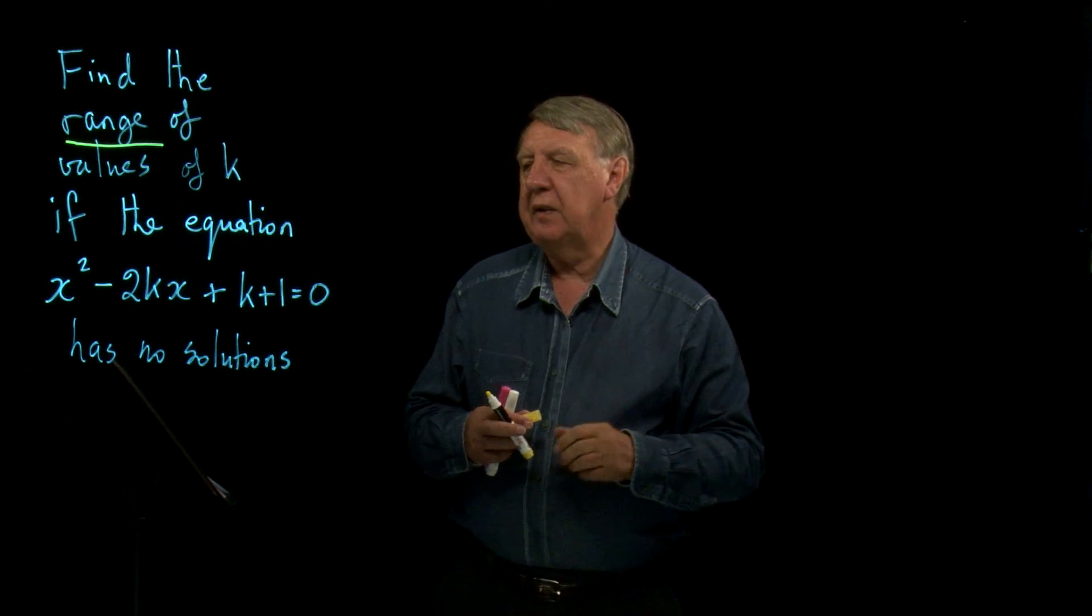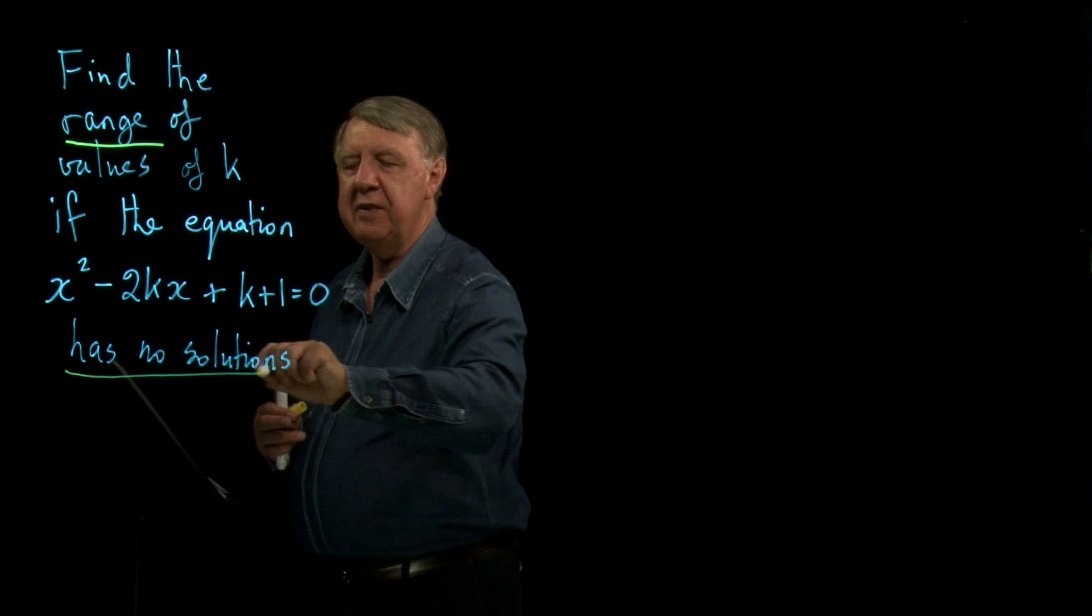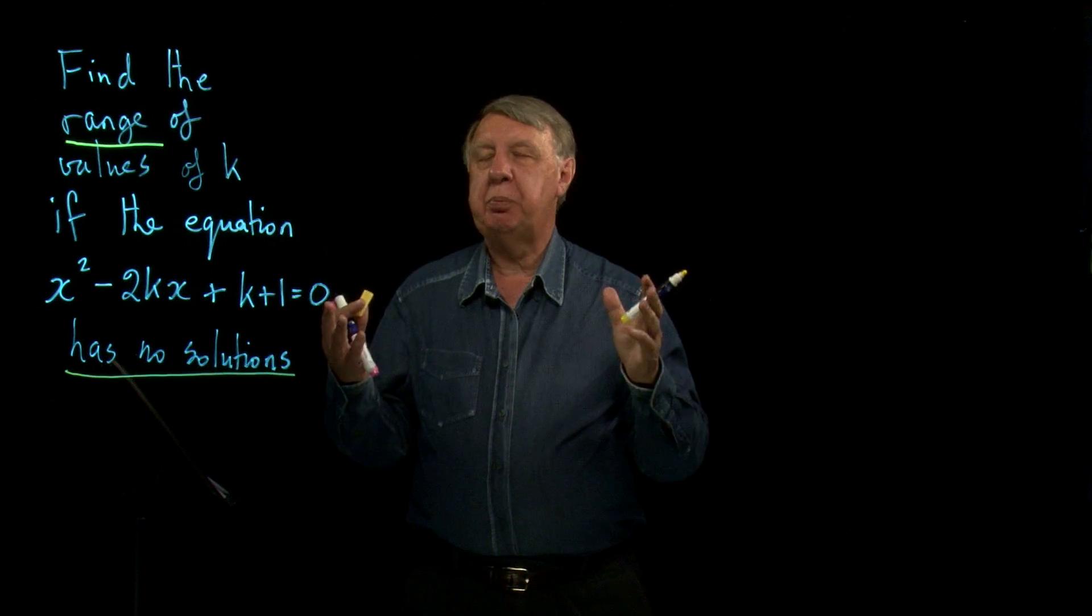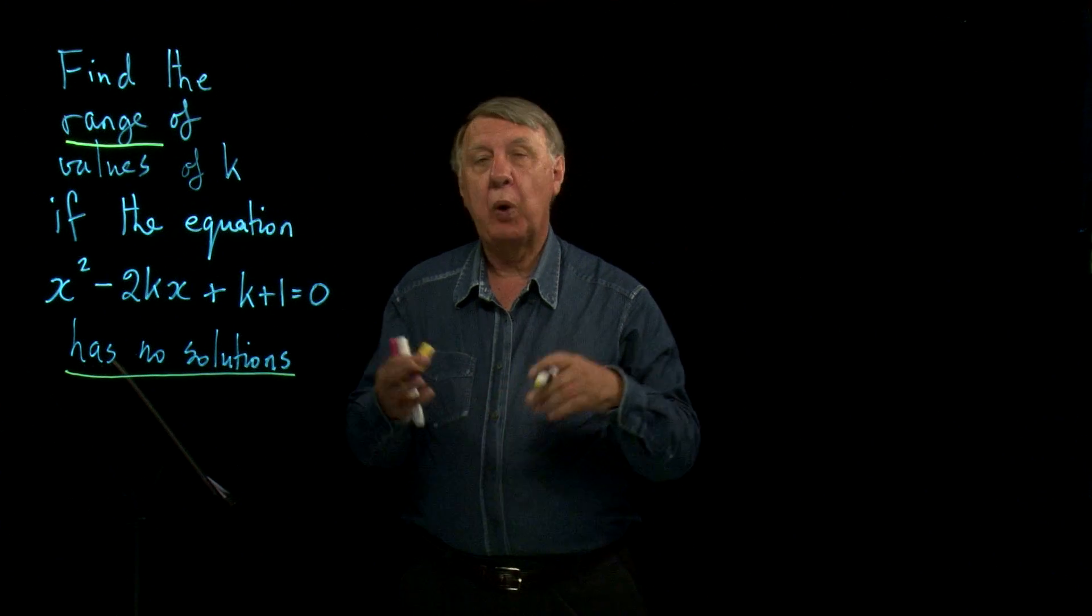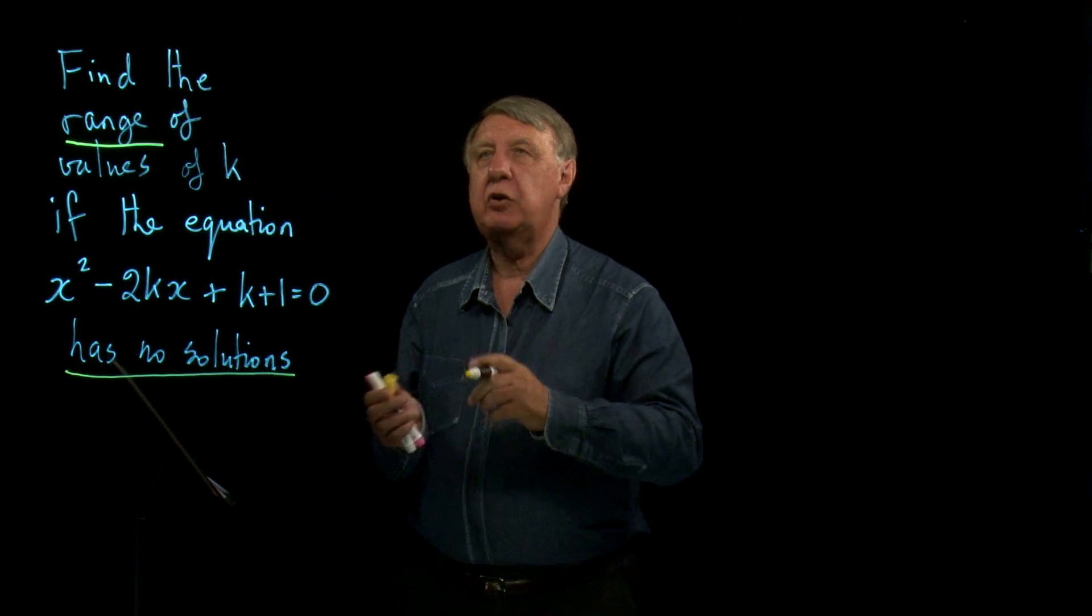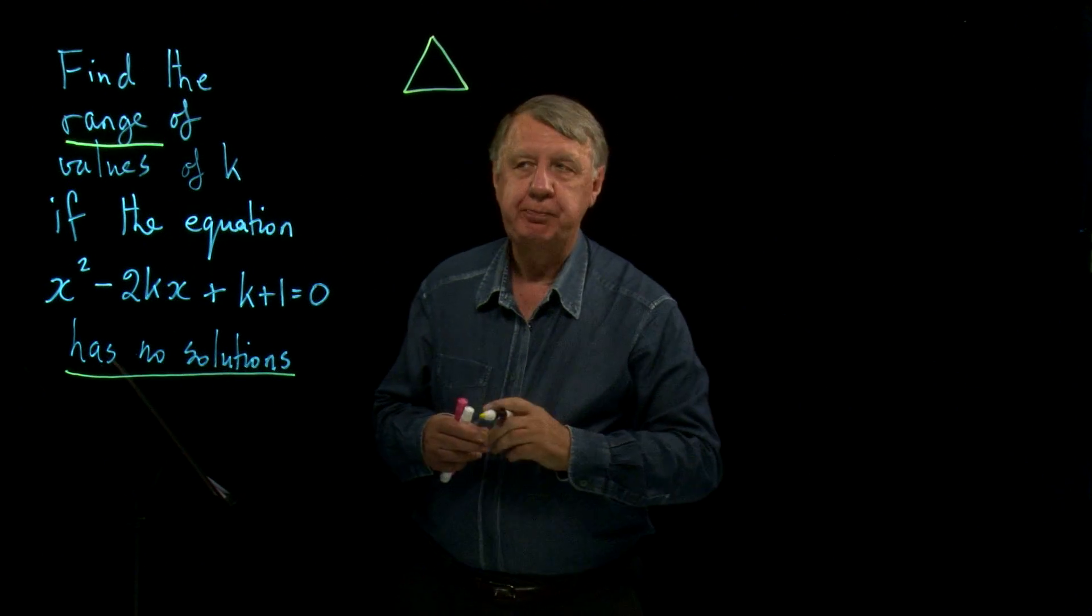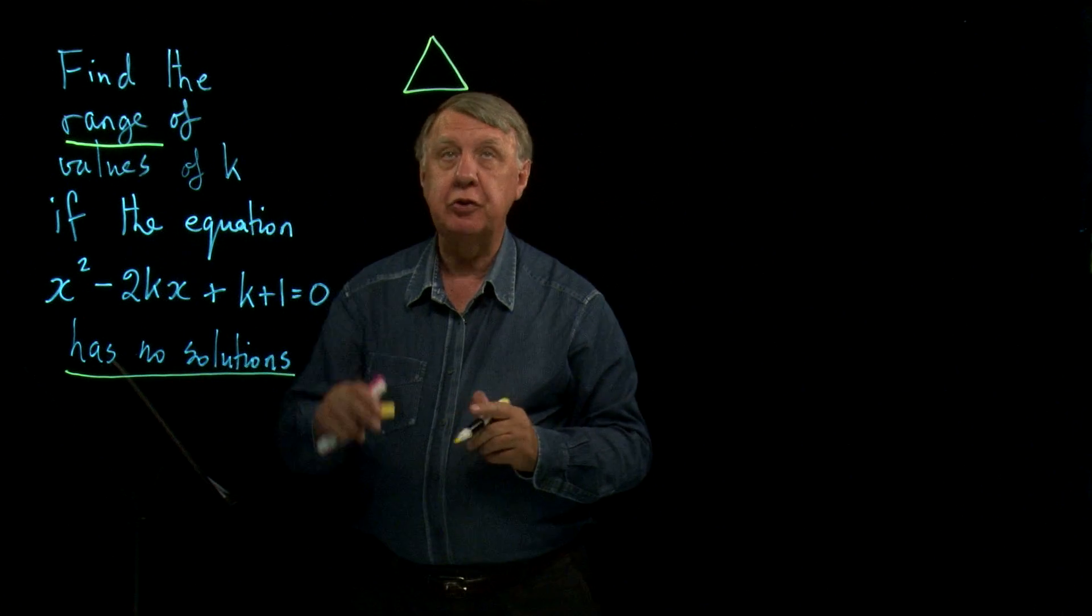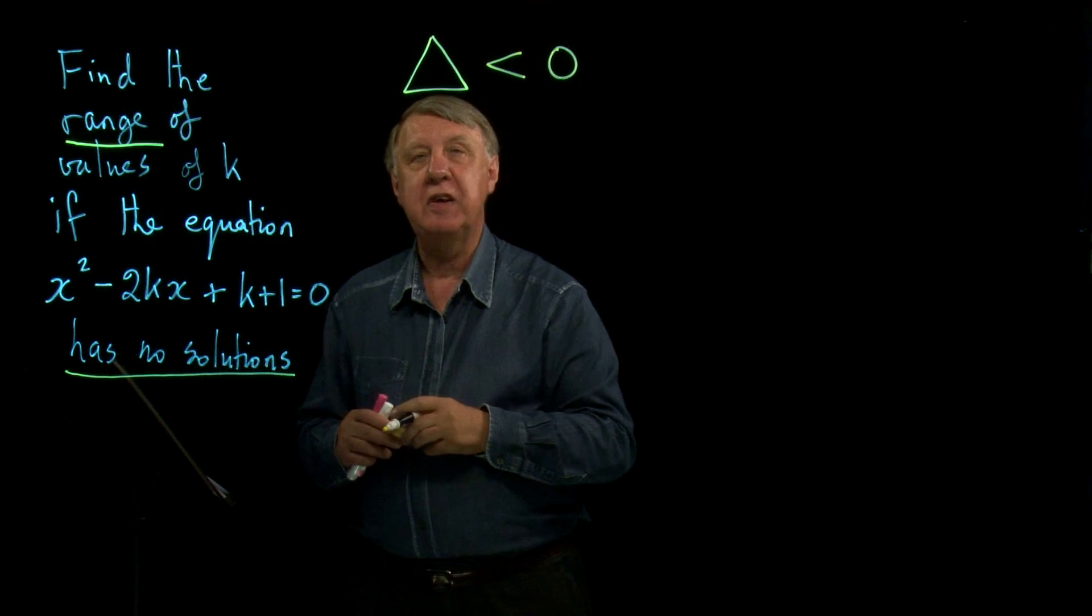Where are the other clues in here? Well let's look at this phrase here, has no solutions. Now bells have to ring when you're looking at this I'm afraid. Where have we come across the number of solutions of an equation? We've come across it to do with our friend the discriminant. Now it says here it wants no solutions and we remember that that's when the discriminant is negative.